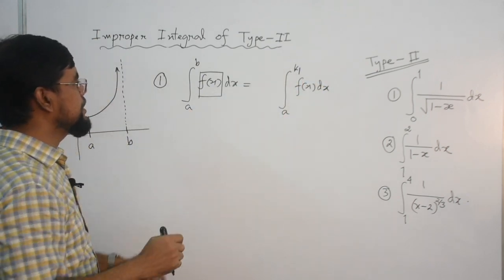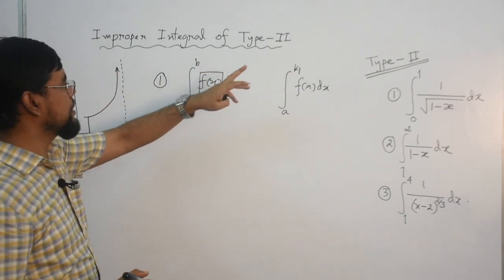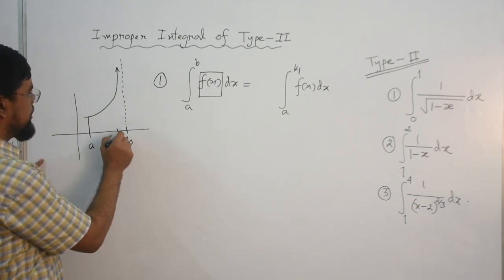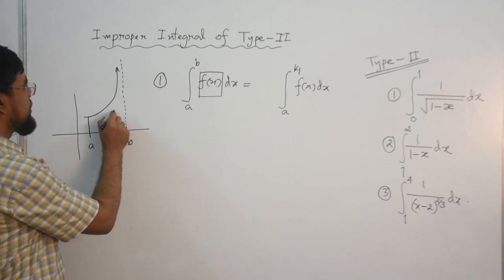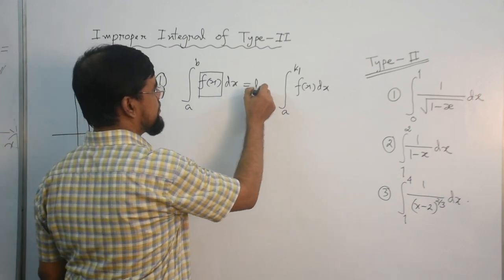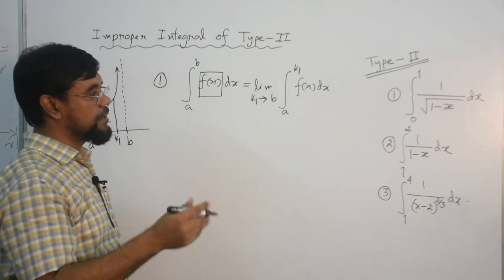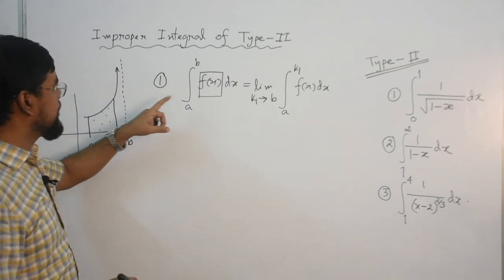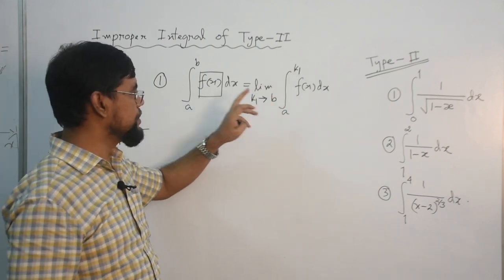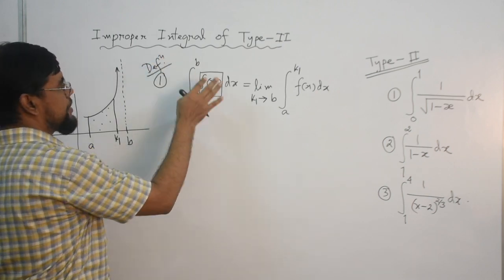The integrand f(x) needs to be continuous at k1. The relation between b and k1 is that k1 is a number which is approximate to b — that is, k1 tends to b. Since you cannot evaluate f(x) at b, we consider a finite number k1 which is approximate to b. This is how you evaluate these types of improper integrals.